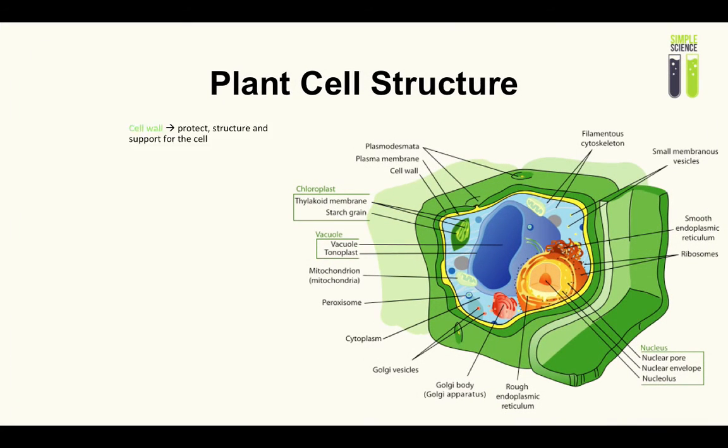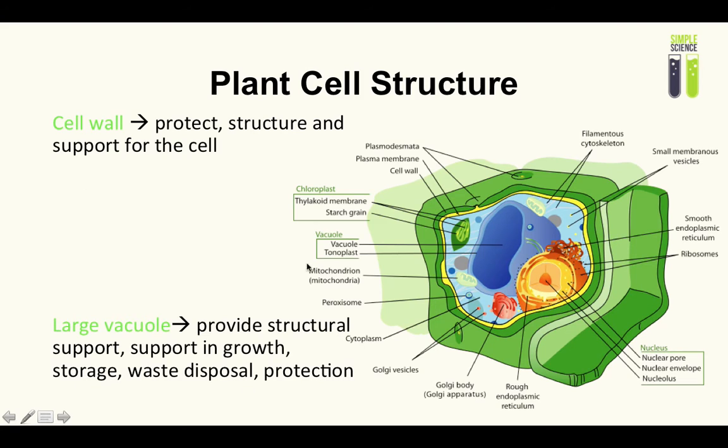Let me just point out on the diagram: the chloroplast is here, this little thing right here. Now we have two more organelles to cover. The first one is the cell wall. Animal cells do not have cell walls; we only have a cell membrane. The cell wall's function is to protect the plant cell.